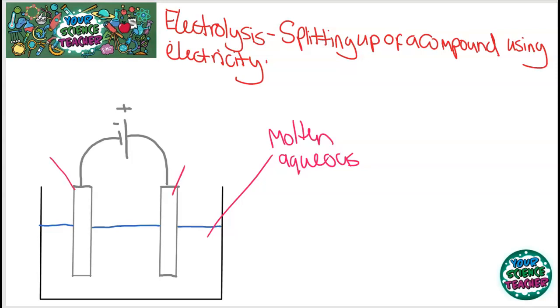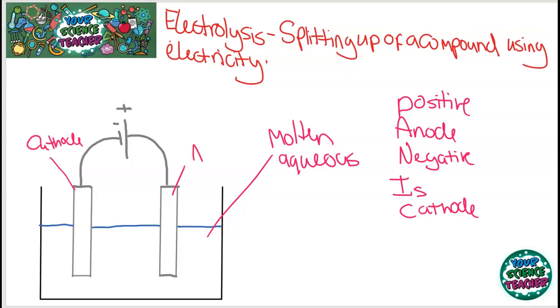You have the anode and the cathode, and remembering which way round these are is important. I always remember it by not panicking. That's a little mnemonic I use to remember it. Positive is anode, negative is cathode. So my negative electrode is my cathode and my positive is my anode.